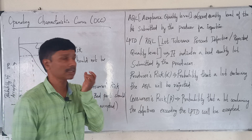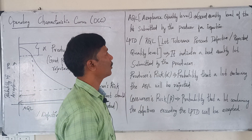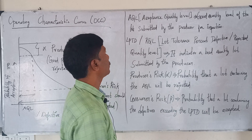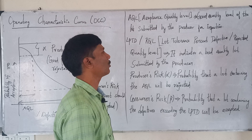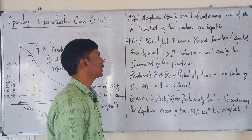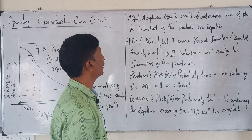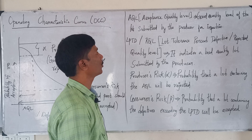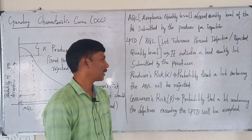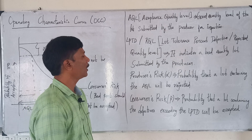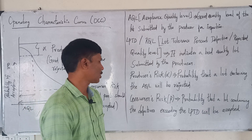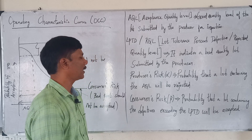AQL stands for Acceptance Quality Level — this is the good quality level of a lot submitted by the producer for inspection. LPTD, or RQL, stands for Lot Tolerance Percent Defective or Rejected Quality Level — this is bad quality. Producer risk is the probability that a lot containing AQL-level good quality will be rejected. Consumer risk is the probability that a lot with defectives exceeding the LPTD will be accepted by the consumer.